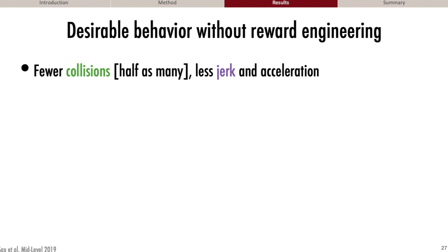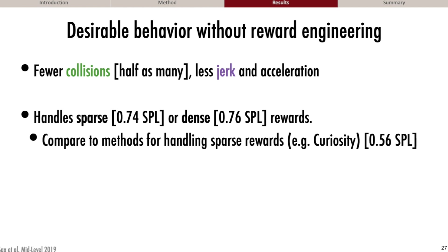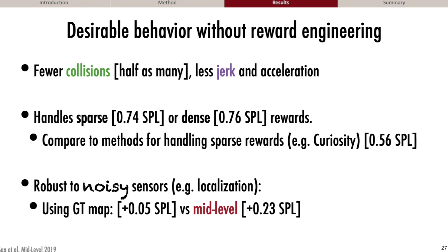In addition to fewer collisions and less jerk, agents using mid-level vision handled sparse rewards roughly as well as dense, and also compared favorably to methods explicitly designed to handle sparse rewards. Agents using mid-level vision were also robust to noisy sensors — we took away ground truth localization and agents using mid-level vision were essentially unaffected. If you had to choose between using ground truth localization or using better vision, the benefits from vision were roughly 4.5 times as large.